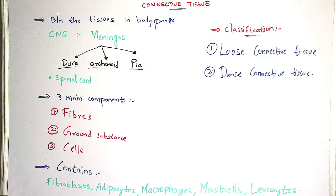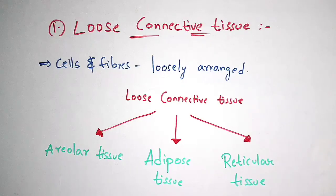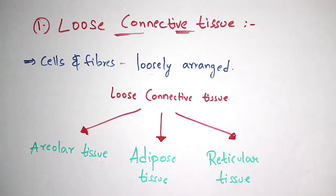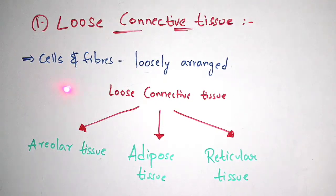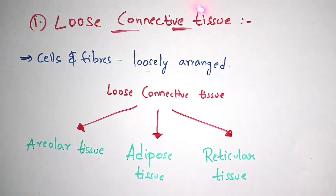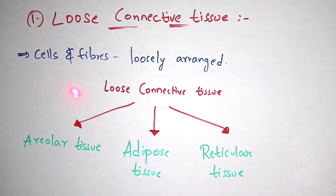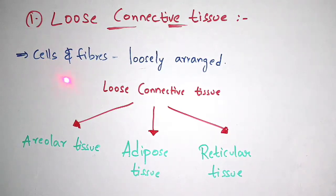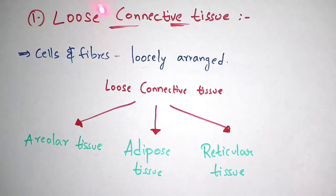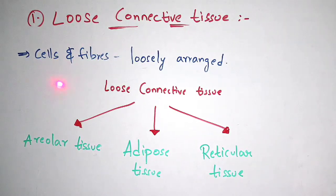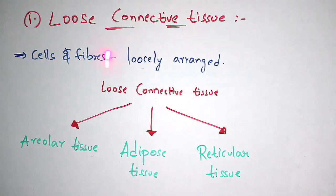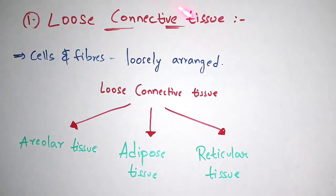Coming to the classification — connective tissue is classified into two types: loose connective tissue and dense connective tissue. In loose connective tissue, the cells and fibers are loosely arranged within the tissue — whether mast cells, adipocytes, collagen fibers, or elastic fibers, all are loosely arranged.